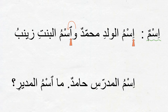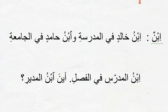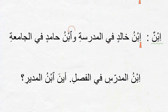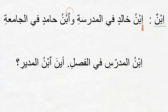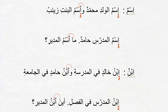Here's another example: إِسْمُ الْمُدَرِّسِ حَامِدٌ مَا اسْمُ الْمُدِيرِ. We read the first إِسْم with كَسْرَة and connect the second to مَا, saying مَاسْمُ الْمُدِيرِ — not مَا إِسْمُ الْمُدِيرِ. Another word starting with هَمْزَةُ الْوَصْل is إِبْنٌ. For example: إِبْنُ خَالِدٍ فِي الْمَدْرَسَةِ وَابْنُ حَامِدٍ فِي الْجَامِعَةِ. Also: إِبْنُ الْمُدَرِّسِ فِي الْفَصْلِ أَيْنَ بْنُ الْمُدِيرِ — the second occurrence is connected to أَيْنَ so we drop the كَسْرَة and say أَيْنَ بْنُ الْمُدِيرِ.